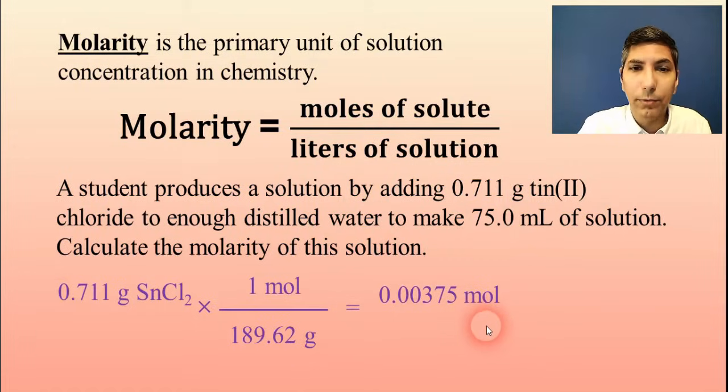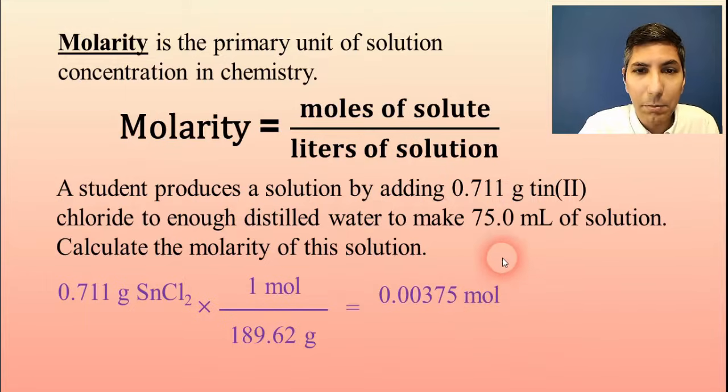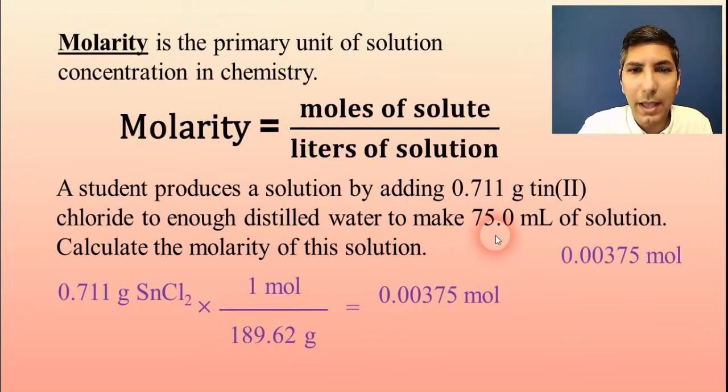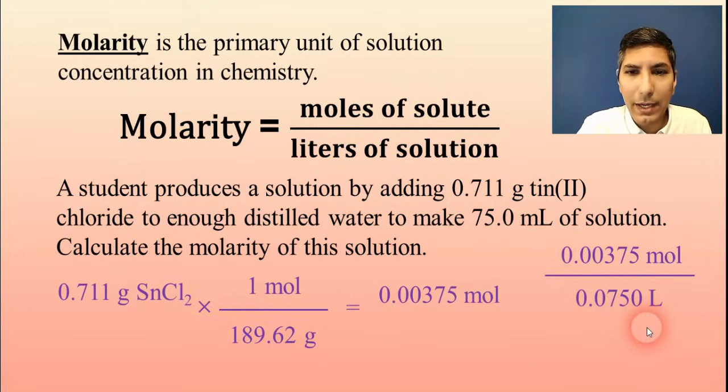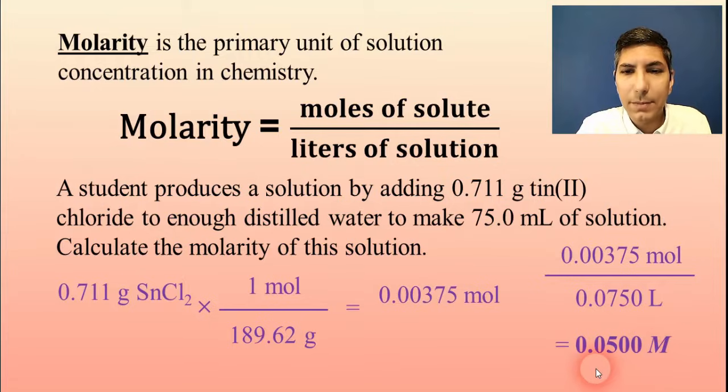Now, since it's moles divided by liters, I have to take this mole value that I just calculated and divide it by liters. Now, not milliliters, I have to convert it. So 75 milliliters is the same as 0.0750 liters. So when I divide that out, I get an answer that the molarity is about 0.0500 molar. So that's how you solve molarity. These are calculations that you should be able to do fairly simply, fairly straightforward.